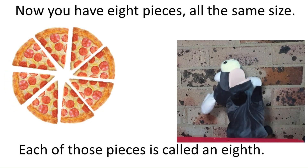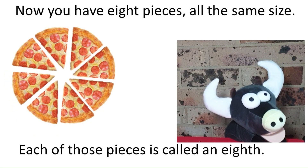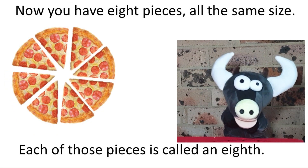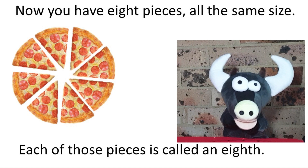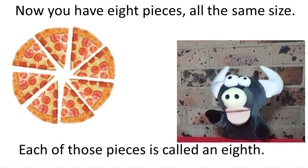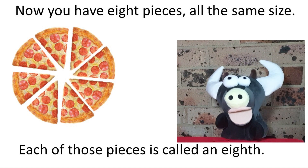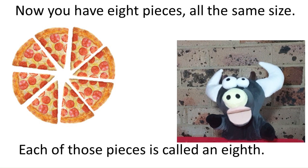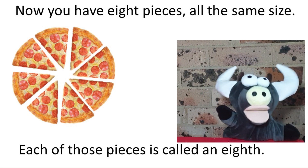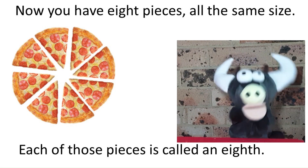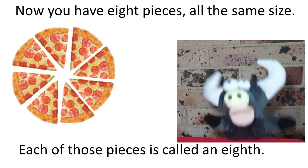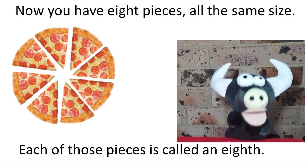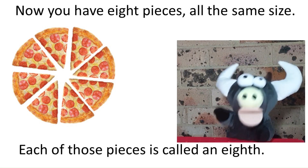so it's a half of a half of a half. Each slice is called an eighth. Eighths are smaller than quarters, and quarters are smaller than halves. But everyone gets a piece.